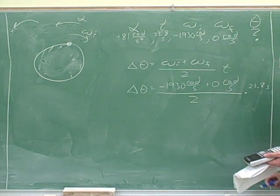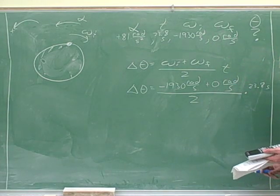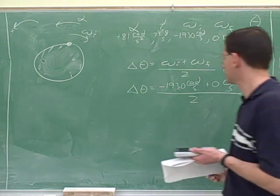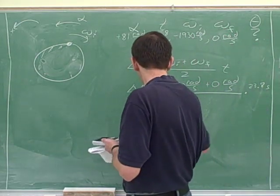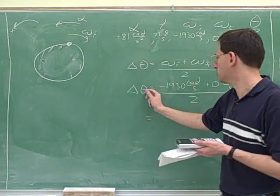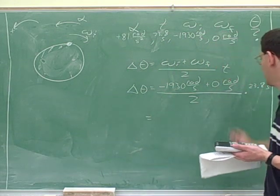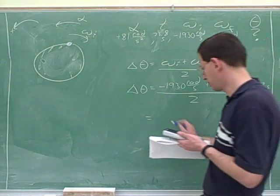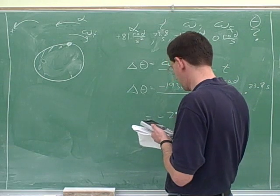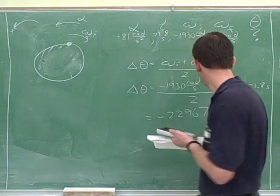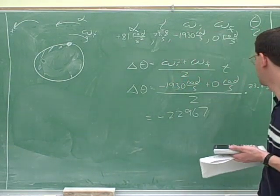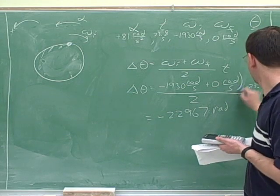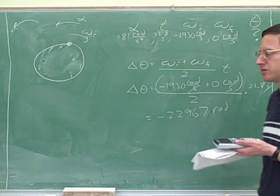Since you decided to use this equation, you actually did use your answer from part B — you used the time you figured out from part B, which is fine. What answer did you get for delta theta here? I got negative 2,296. And what units? Because the seconds cancel.